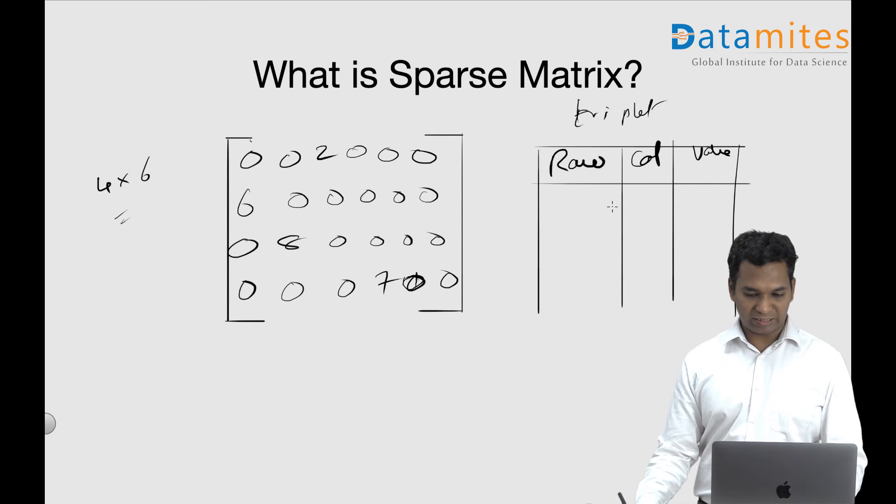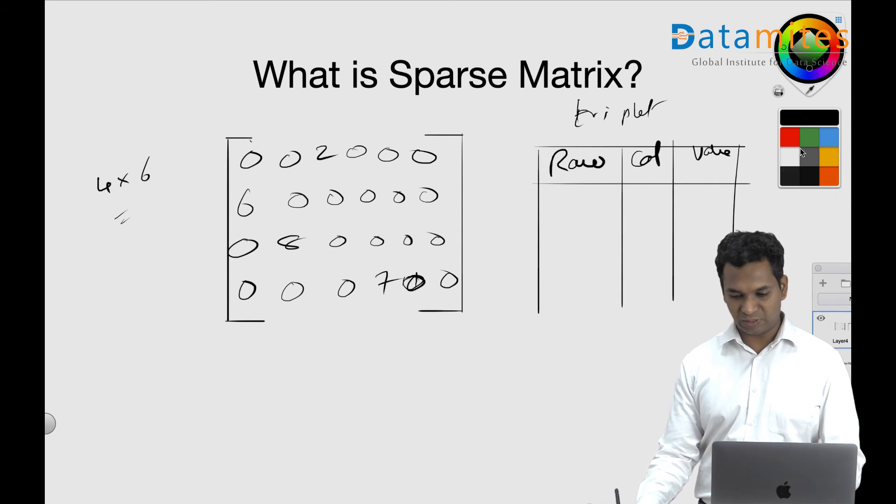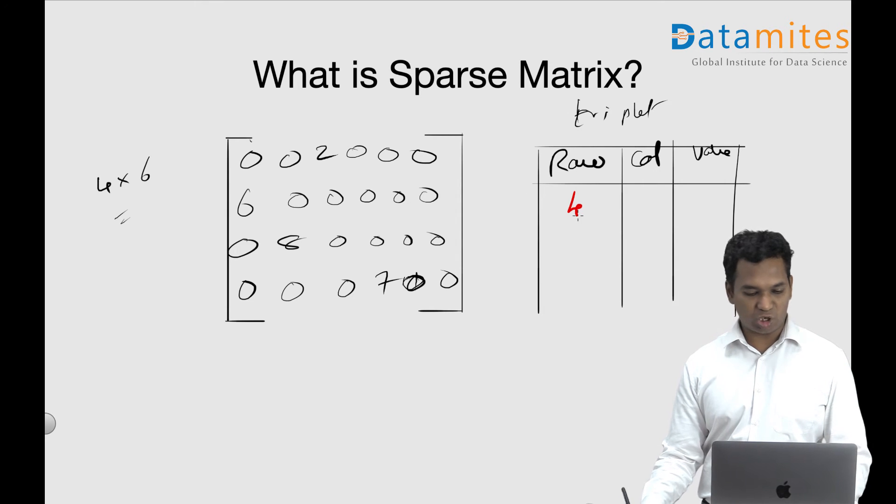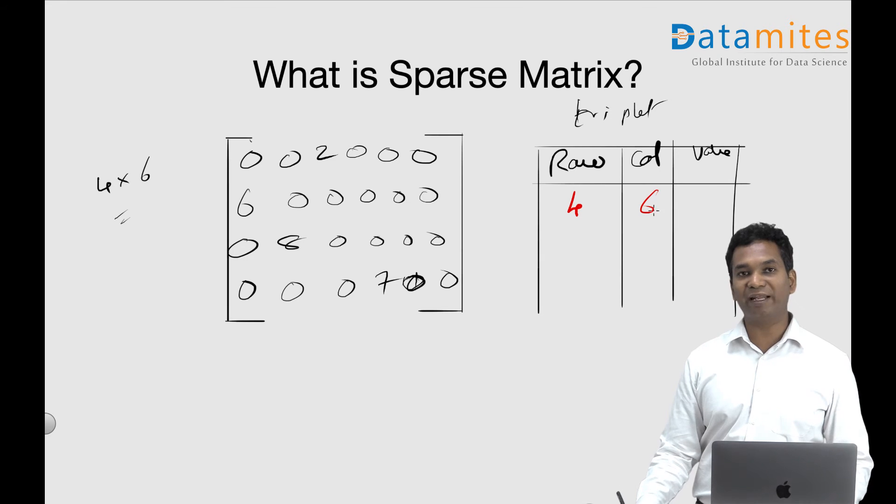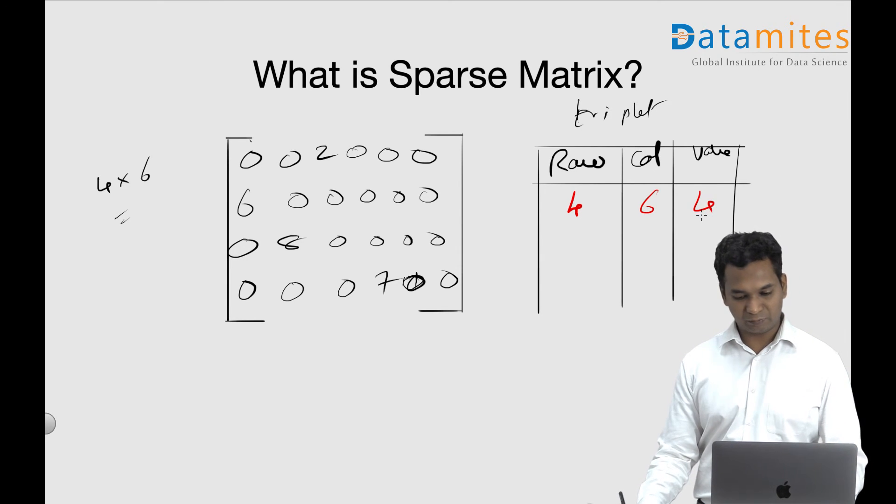I'll take a different color. So how many rows, how many columns we have - we have six columns - and how many non-zero elements we have, we have four non-zero elements.